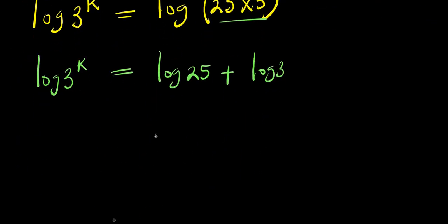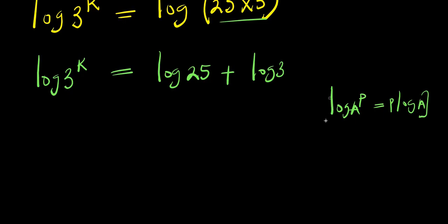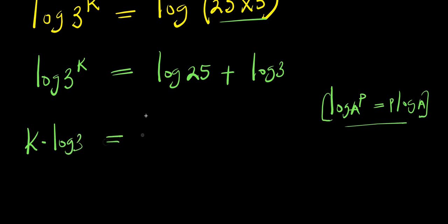Now, remember: if you have log(a to the power b), this equals b times log a. Applying the same property here, this will be k times log 3 equals log 25 plus log 3.